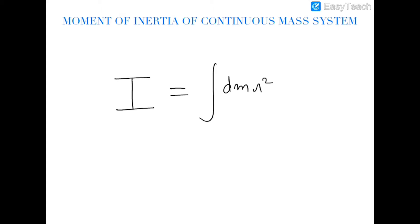In this video we are starting the moment of inertia of continuous mass systems. The formula we will use is I = ∫r²dm. This can be understood from the fact that in a discrete mass system we used summation, because summation adds discrete values, whereas to add continuous functions we use integration. So to find the moment of inertia of a continuous mass system we use I = ∫r²dm.